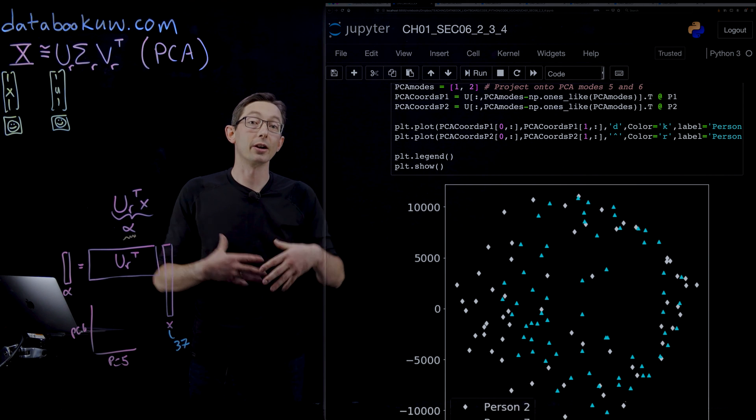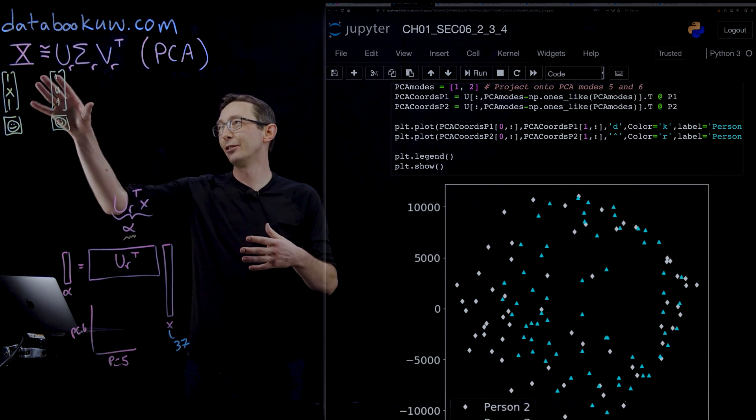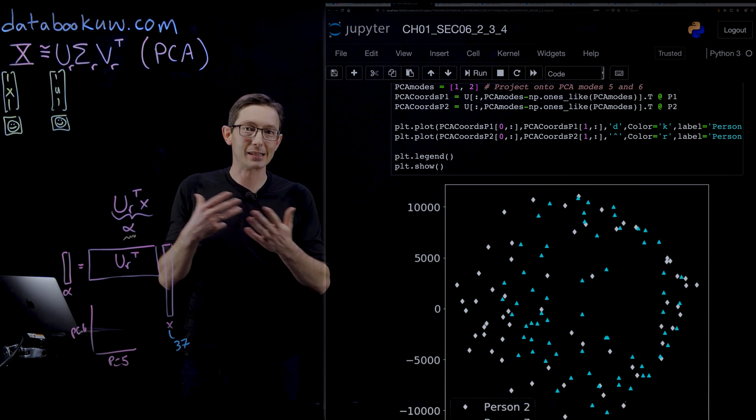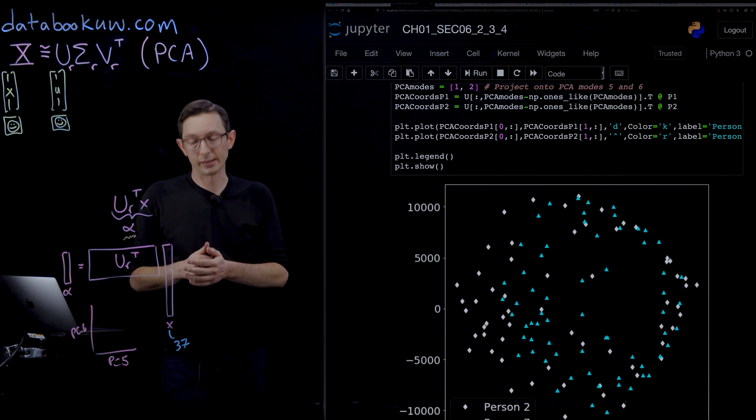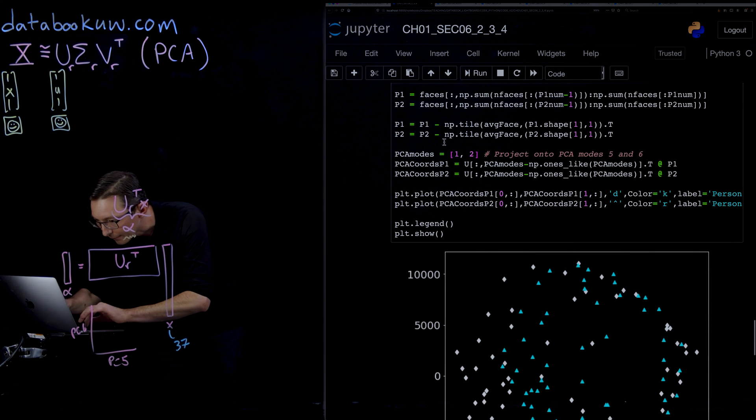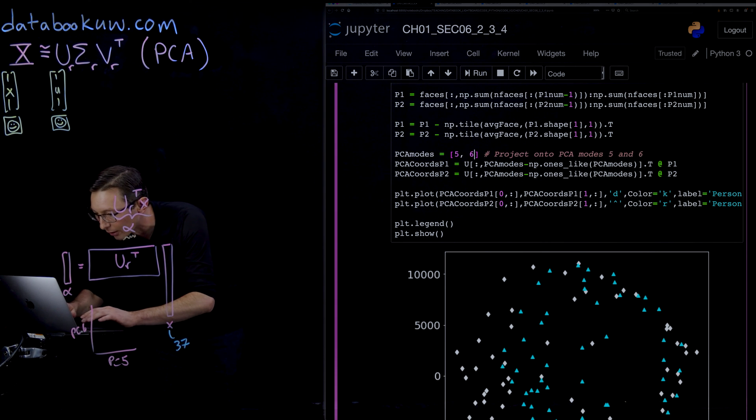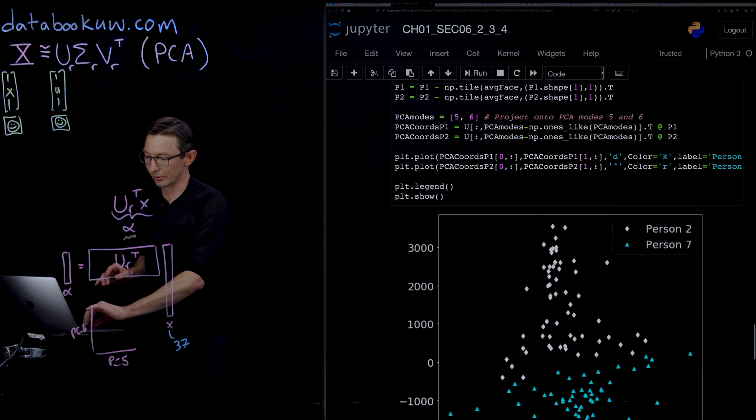Because those are the features that generally are the same, or in this Yale faces database, maybe it's shadow differences or things like that. If I go back to five and six, we recover our really nice separation, nice clean separation.